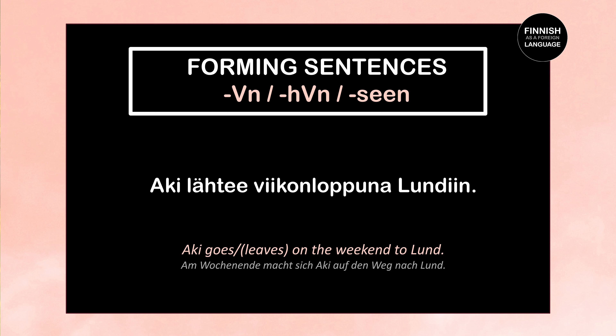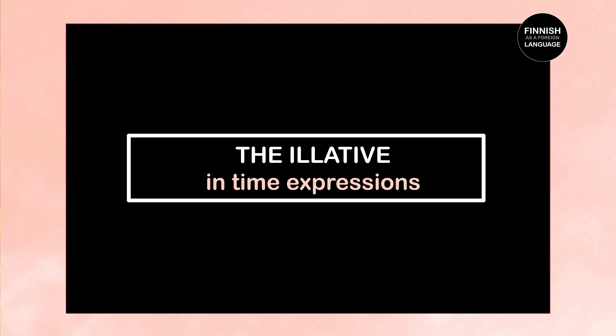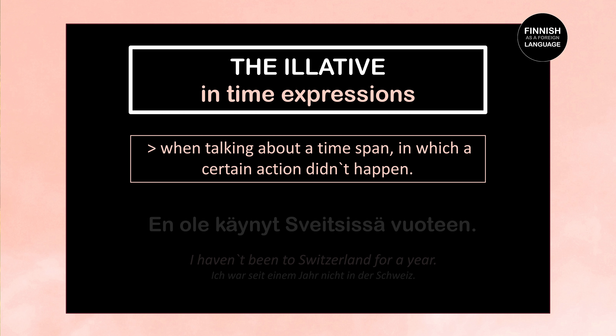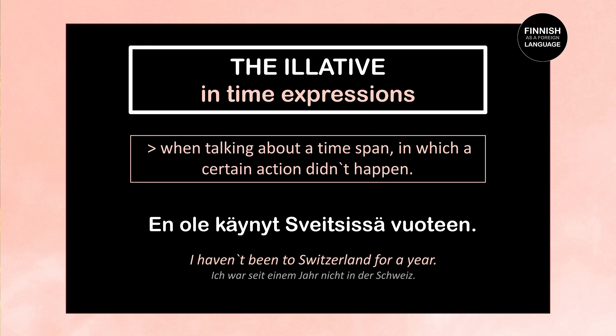Now let's see how to use the illative case in time expressions. When talking about a time span in which a certain action did not happen, we use the illative. For example: En ole käynyt Sveitsissä vuoteen — I haven't been to Switzerland for a year. En ole käynyt is the first person singular perfect negative of käydä. Sveitsissä is the illative of Sveitsi, and vuoteen is the illative of vuosi, meaning year.